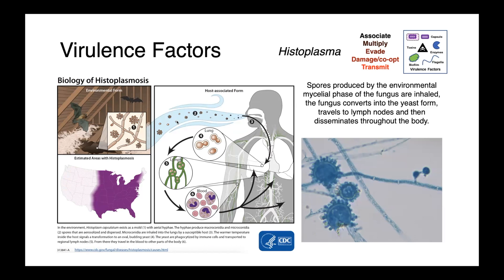Histoplasma capsulatum grows in the mycelial phase in the environment, particularly in environments that have bird and bat feces. The macroconidia and microconidia are aerosolized and inhaled by a susceptible host. Once inhaled, they convert to the yeast form, which is then able to disseminate through the body via the lymphatics and cause distant infections.